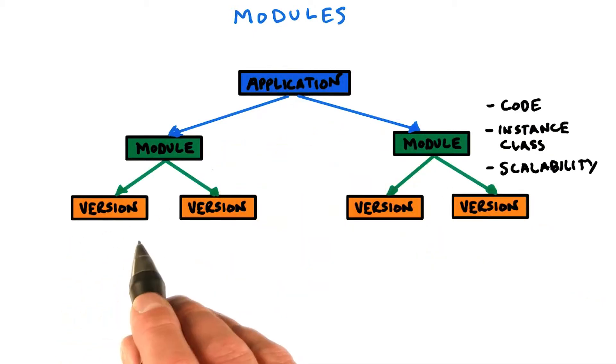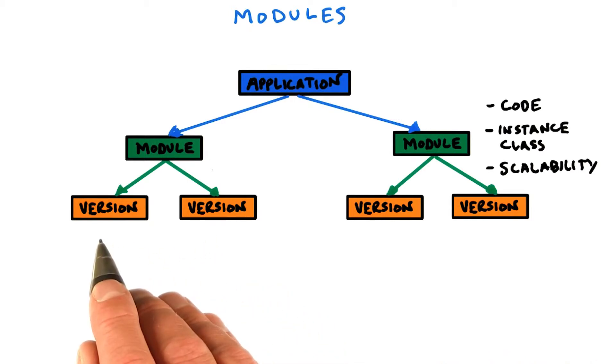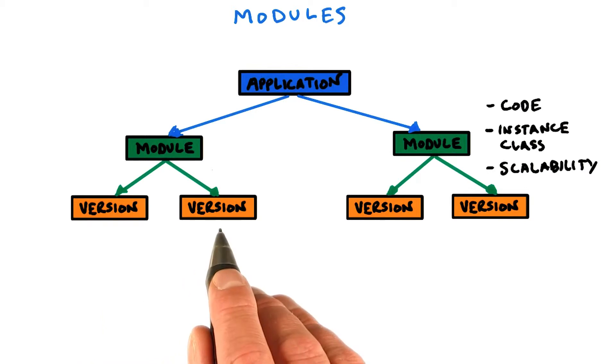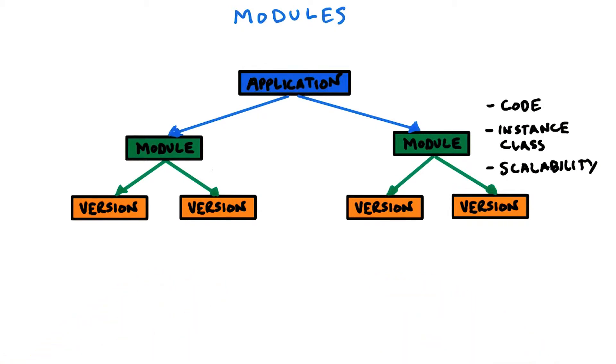Each module can then have a number of different versions associated with it. A version is essentially a version of your code being maintained in the module. So after you have deployed your application into production, you can deploy new versions of your code and have multiple versions running in parallel, and gradually migrate traffic from the old version to the new. This capability allows you to do version upgrades without having to bring down your application, something that is extremely difficult to do without App Engine.